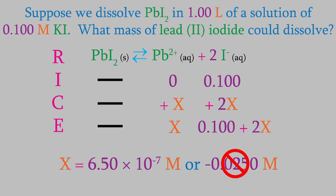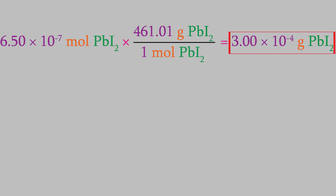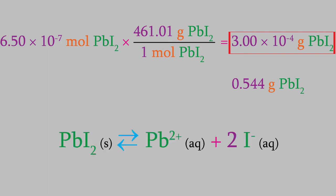That means we have a lead(II) iodide concentration of 6.50 × 10⁻⁷ molar. Since we have 1 liter of solution, that's also the number of moles. Converting to grams gives 3.00 × 10⁻⁴ grams of lead iodide dissolved. Notice this is much less than the 0.544 grams that dissolved in our earlier example in pure water — that makes sense because we dissolved the solid in a solution already containing iodide ions, so Le Chatelier's principle predicted the reaction would shift left and less lead iodide would dissolve.